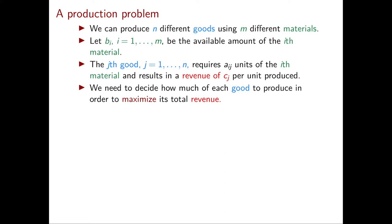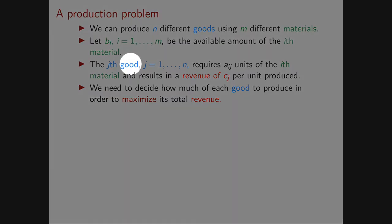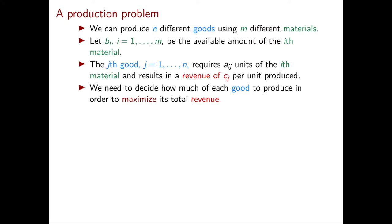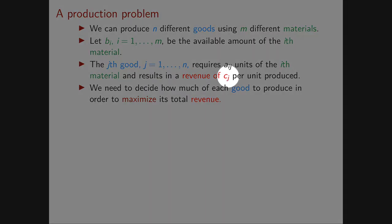Next we know the connection between the goods and the materials. Namely for every good we know exactly the amount of material required to produce such a good. In order to produce the j-th good we need a_ij units of material i. So all these a_ij form the data that is given to us in this problem. The last piece of data that we need is the revenue: selling a unit of good j will result in a revenue of c_j.